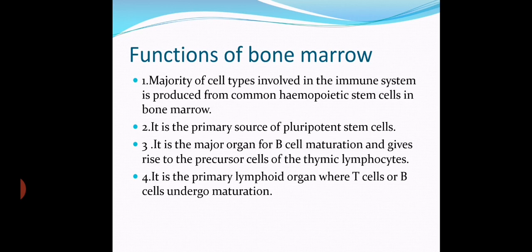Originally, T cells and B cells are not matured when they are produced — they are immature. After certain maturation stages, they develop and become mature, acquiring the ability to produce antibody or any type of immunity — either cell-mediated immunity or antibody-mediated immunity. After maturation they acquire certain receptors on their cell surface and are able to recognize antigens and produce immunity accordingly.